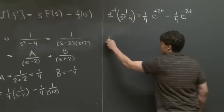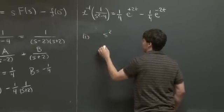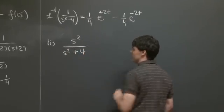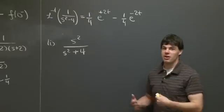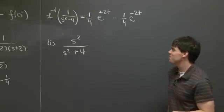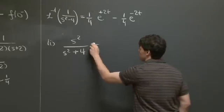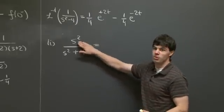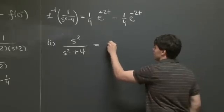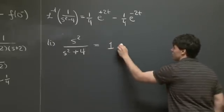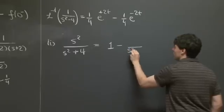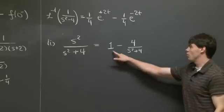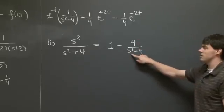For the second function, we have s squared divided by s squared plus 4. This function is not in the correct form for a Laplace transform lookup table, but what we can do is use long division of polynomials to divide the numerator out by the denominator. When we do that, we end up with 1 minus 4 divided by s squared plus 4.